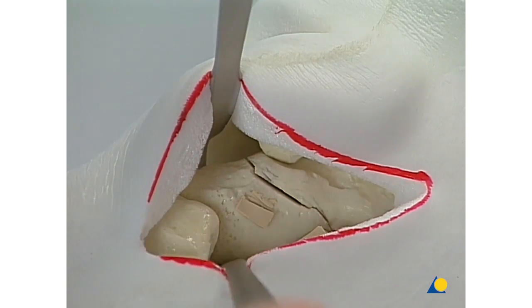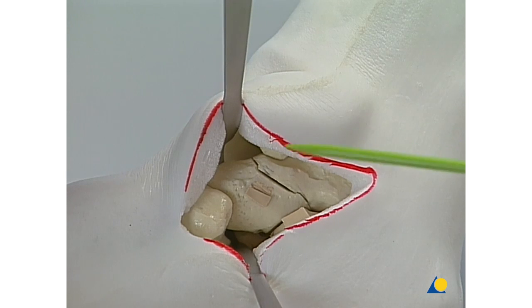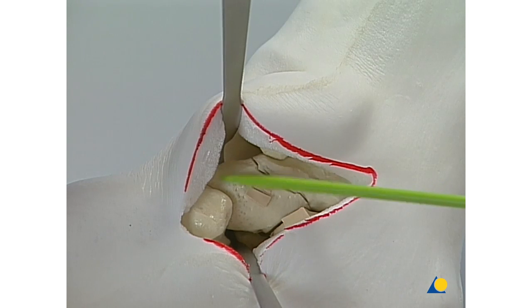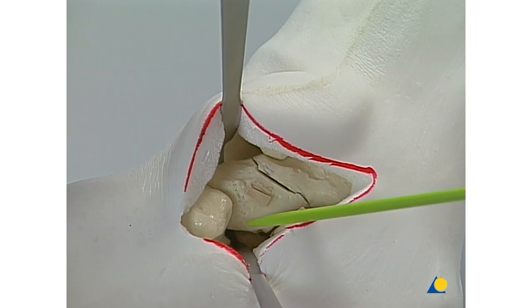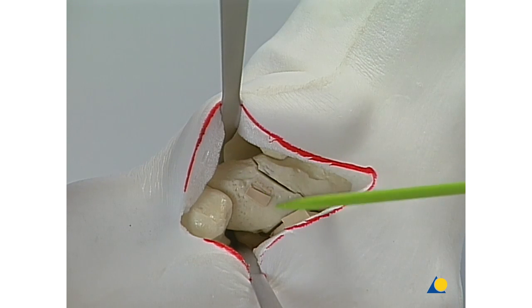Another small retractor is placed below the talar neck. Shown here are the navicular and the talonavicular joint. This is the talar neck and the talar fracture which ends below the sustentaculum tali.